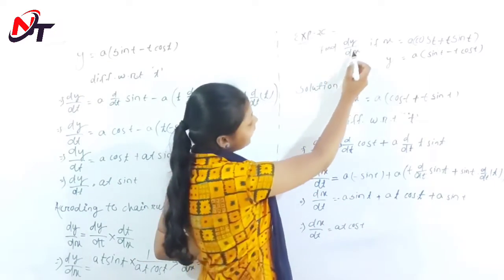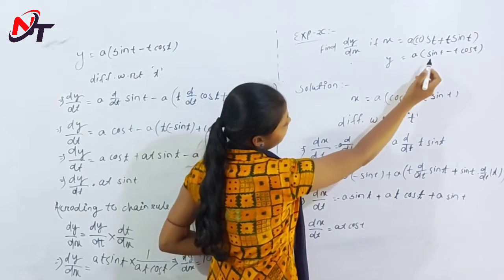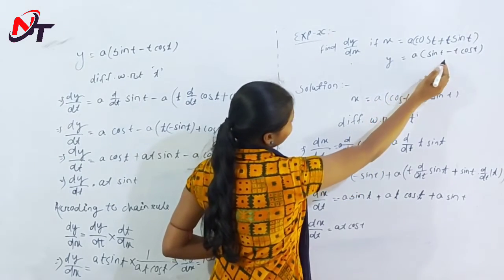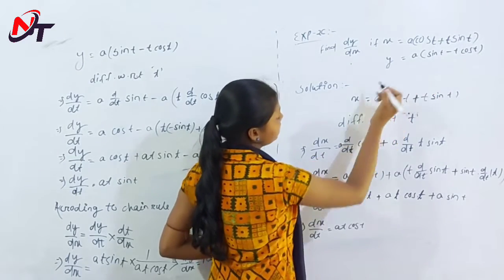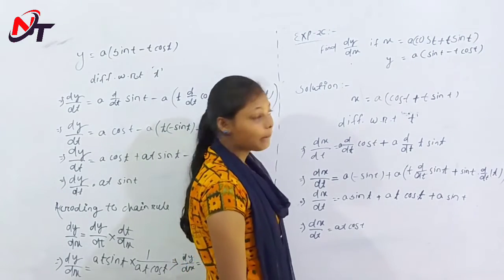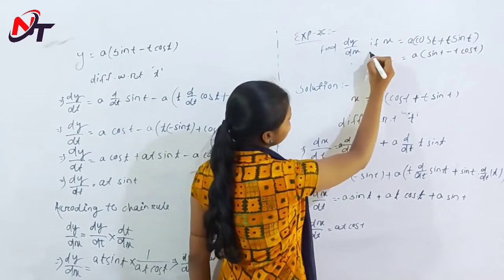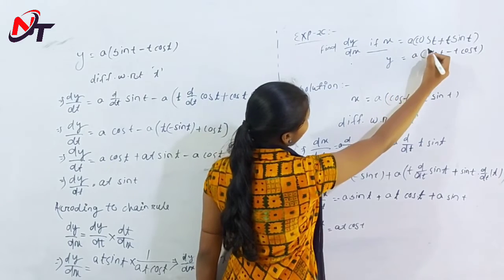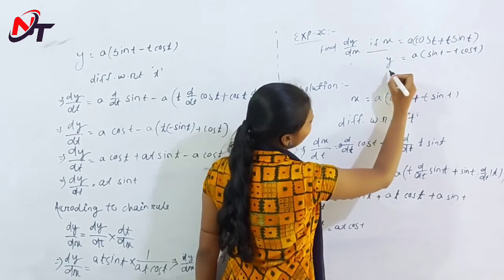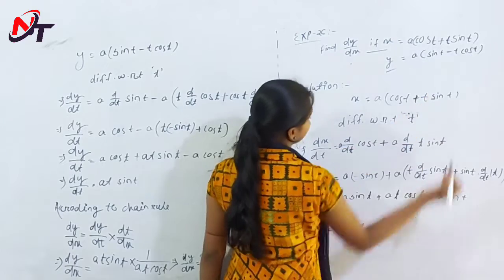Find dy/dx if x is equal to a cos t plus t sin t, and y is equal to a sin t minus t cos t. So dy/dx is equal to the derivative data. Given: x is equal to a cos t plus t sin t, and y is equal to a sin t minus t cos t.